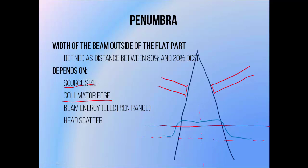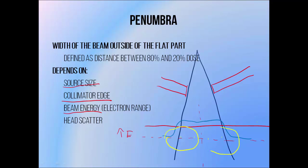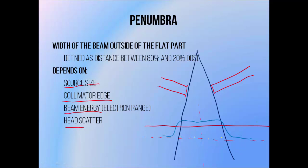Beam energy is also important, because a photon beam turns every irradiated point in a phantom or patient into a small source of electrons and scattered photons. As beam energy increases, secondary electron range increases also. Electrons produced by points near the edge of the beam drift outside of the beam itself and contribute dose outside — this is a very significant reason why beam penumbra exists. As beam energy increases, secondary electrons travel further outside of the beam, which widens the penumbra. The treatment head scatter also increases the width of the penumbra, as a lot of scatter occurs inside the flattening filter, which is closer to the patient than the target, allowing scattered photons to take steeply angled paths and contribute dose outside of the field.